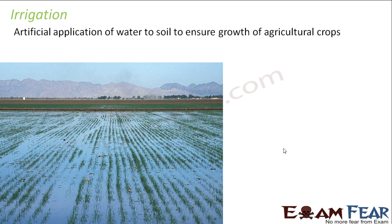That is why we have this artificial application of water, which is known as irrigation. Here you can see a big wheat field which has been irrigated — you can see that water is there everywhere. We will now look at the different ways in which fields are irrigated and why we need irrigation at all.